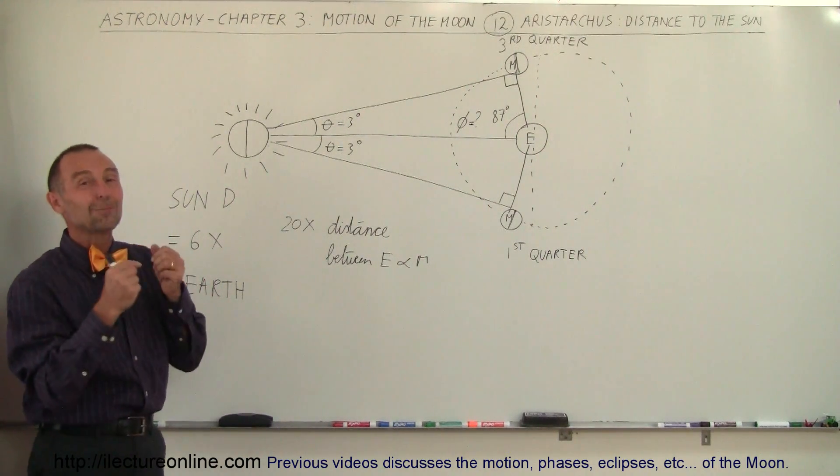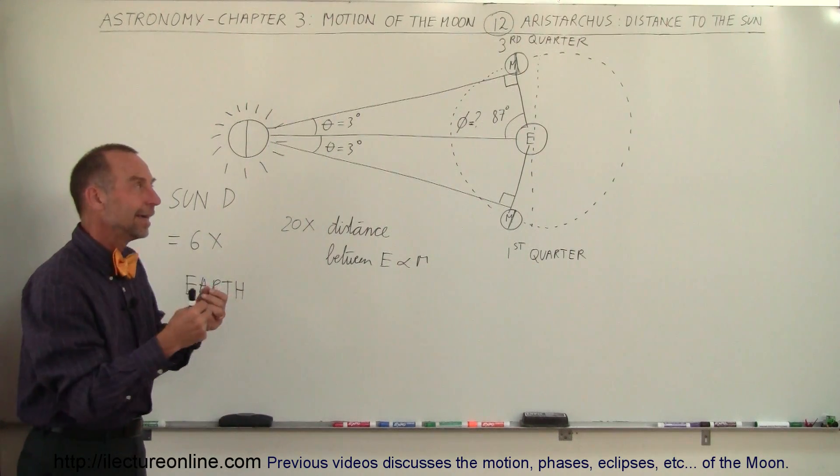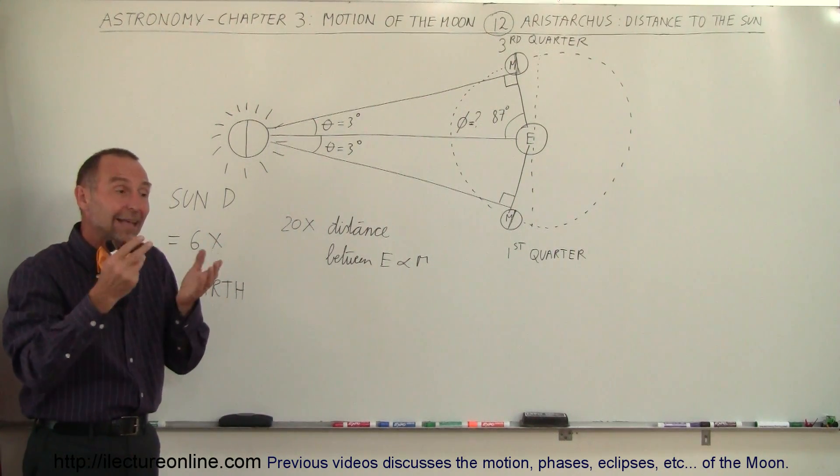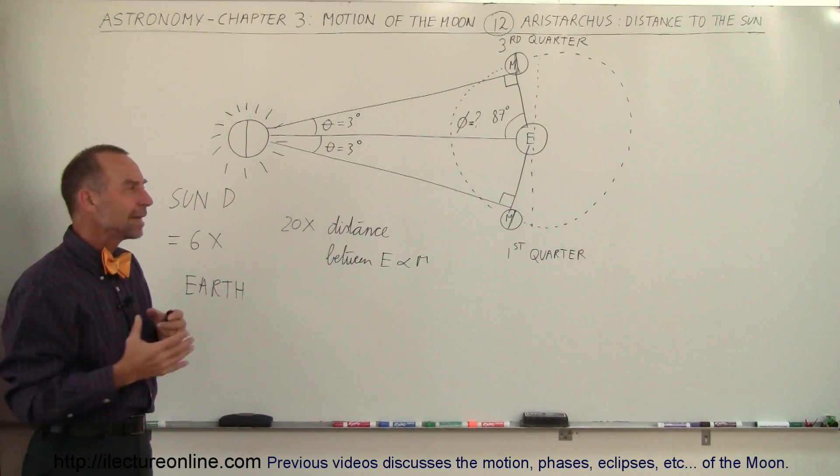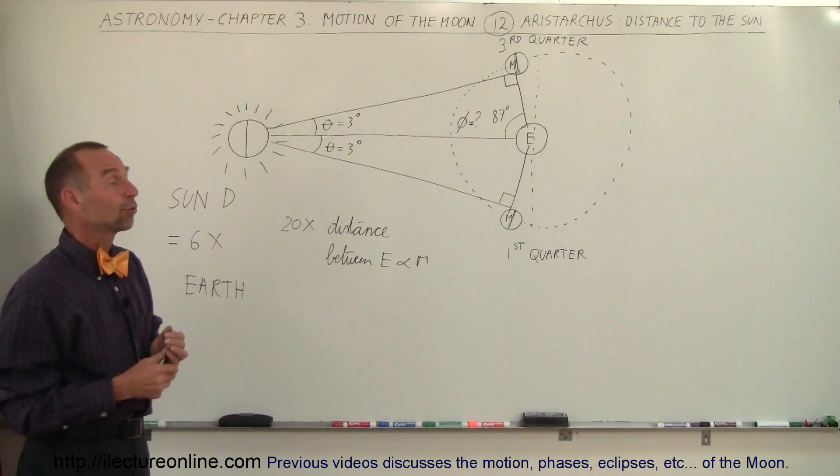Even though he wasn't able to measure the angle any more accurately, it was a brilliant concept. He actually did get a presumption that the sun was very big and very far away, which of course was true as well.